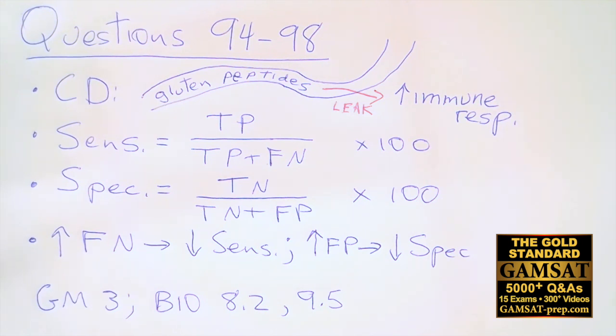Now we get to answer choice B: intestinal permeability. So permeability refers to leakiness to gluten peptides - yes, exactly. This is the cause. The leakiness creates a cascade of events in the immune system until the body actually starts attacking itself, and this is the nature of autoimmune disease.